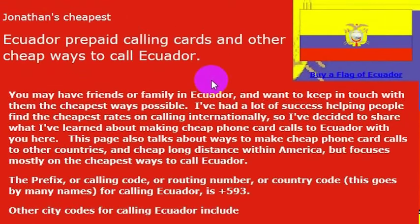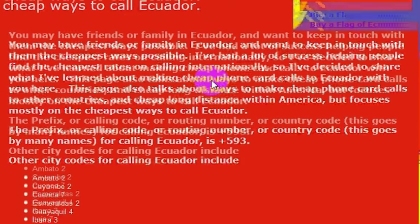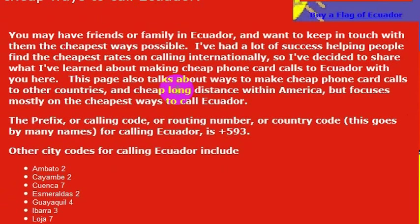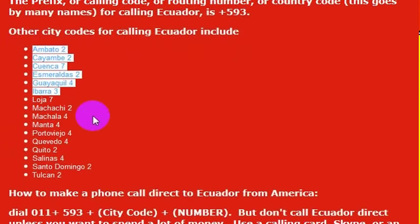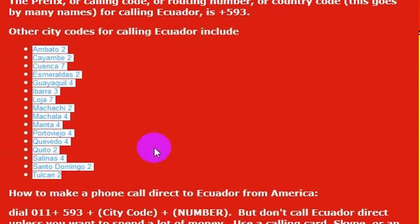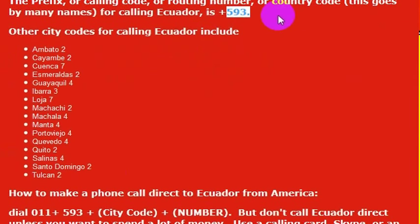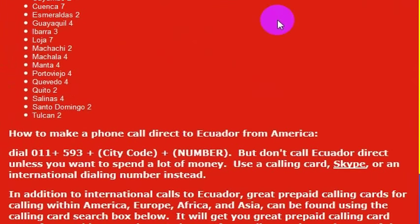I took Spanish classes there. You have to be careful, of course — it's a little bit different than being in the United States. But if you have family or friends there, or maybe you're moving there or investigating moving there, to call Ecuador you'll need to know the country code, which is 593. Different cities have different number codes to reach them, but the country code for Ecuador is 593.